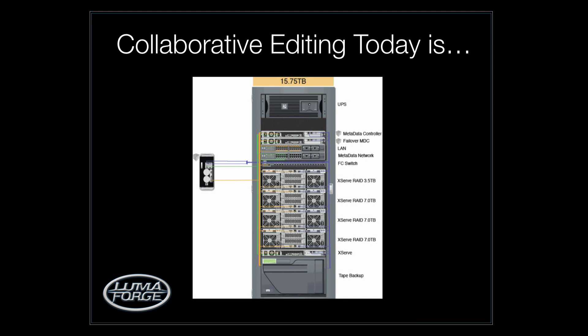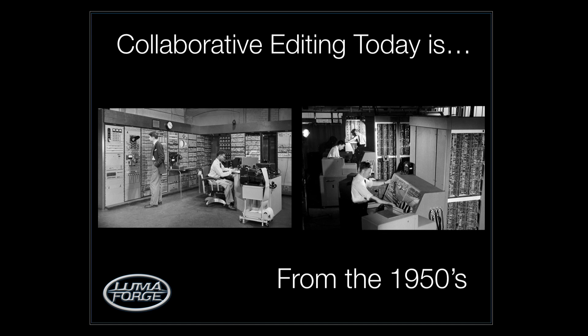When we step through the traditional XSAN architecture - which is what you're typically looking at in a giant rack - you've got a UPS, a metadata controller, one or two MDCs passing metadata, a secondary internet connection sending that to your clients, a fiber channel switch actually sending the data, and then a whole bunch of giant hard drive chassis. When it's all said and done, what is this really reminiscent of? This is supercomputing from the 1950s.